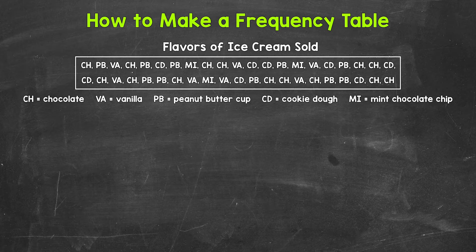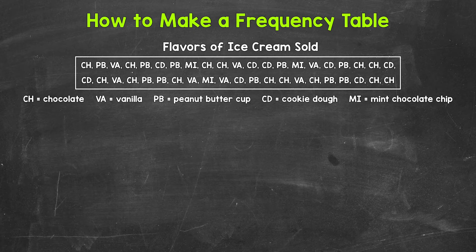For our data, let's say that an ice cream shop kept track of the flavors being sold over the course of a day to see how sales of each flavor ended up. Here are the results. CH stands for chocolate, VA stands for vanilla, PB stands for peanut butter cup, CD stands for cookie dough, and MI stands for mint chocolate chip.